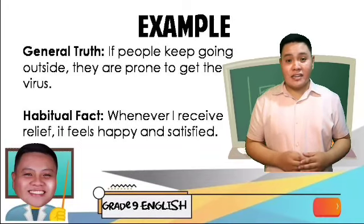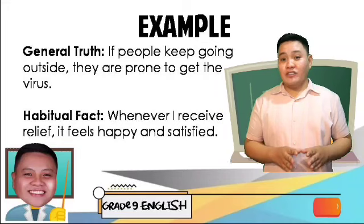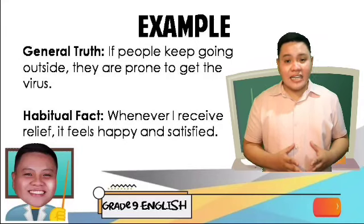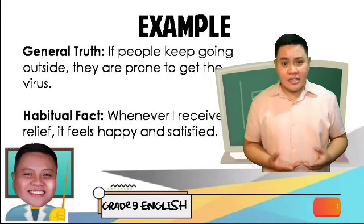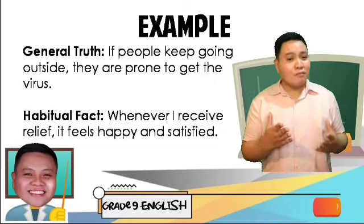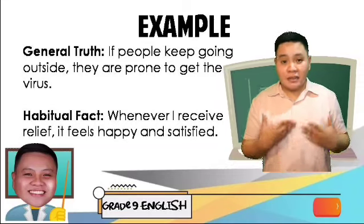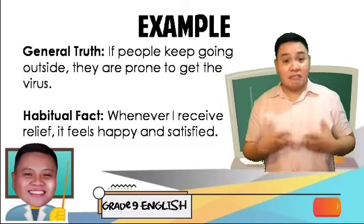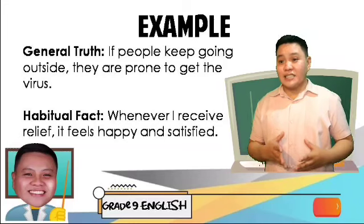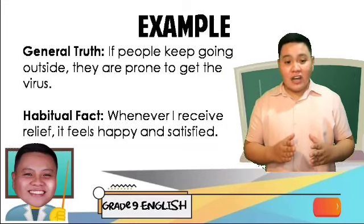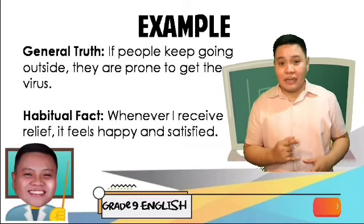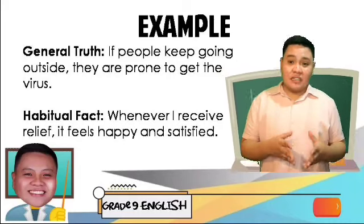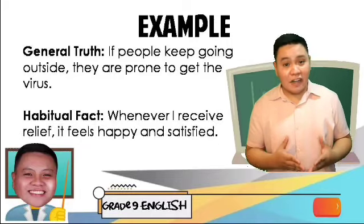Here are two examples. Number one: 'If people keep going outside, they are prone to get the virus.' Remember that what is stated in the if clause is expected to happen — if people keep going outside, they are really prone to get the virus. Another example: 'Whenever I receive a relief, it feels happy and satisfied.' The if clause is the event or situation that must happen in order for the other thing to happen. So whenever people receive relief, it always feels happy and satisfied.